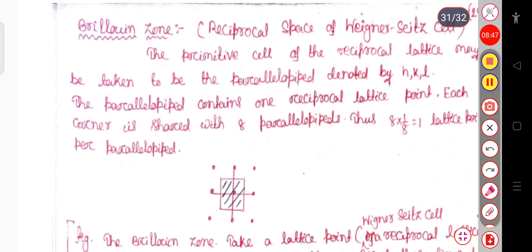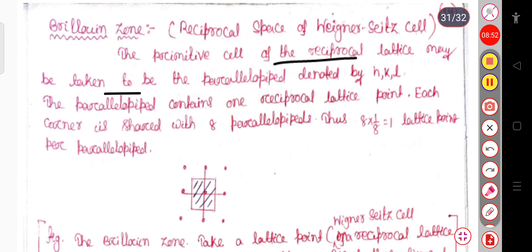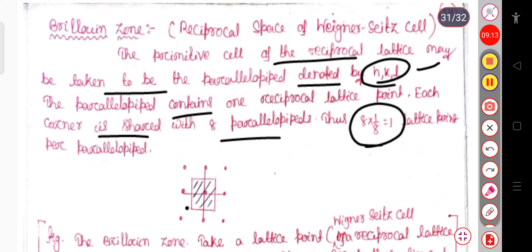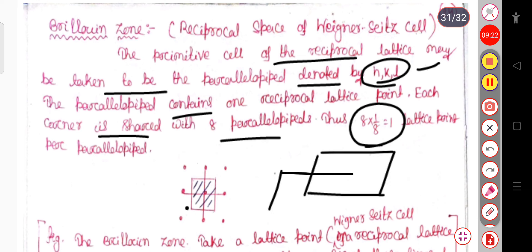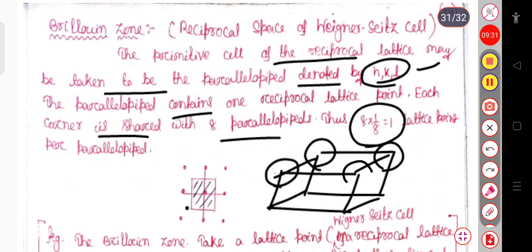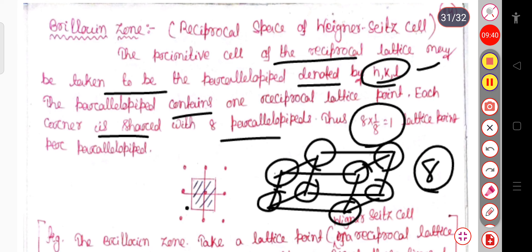Now we will see the Brillouin zone, which is the reciprocal space analog of the Wigner-Seitz cell. The primitive cell of the reciprocal lattice may be taken as a parallelepiped denoted by hkl — the Miller indices — in Fourier space or k-space. The parallelepiped contains one reciprocal lattice point, and each corner is shared by eight parallelepipeds, so that gives eight times one-eighth equals one lattice point per parallelepiped.